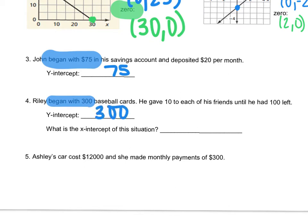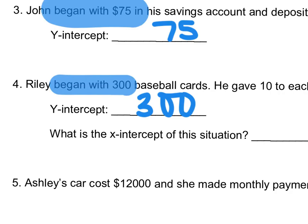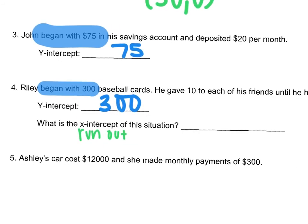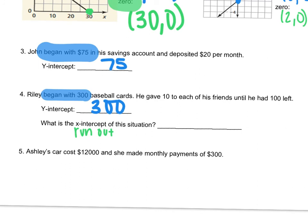Now it asks us to identify the x-intercept of this situation. In word problems, the x-intercept is where you run out of something, or where you hit empty, or where there's nothing left. So if Riley began with 300 baseball cards and gave 10 to each of his friends until he had 100 left, the x-intercept would be when he ran out. But he's never going to run out because he still had 100 left, so there is no x-intercept — it's not ever going to touch the x-axis.